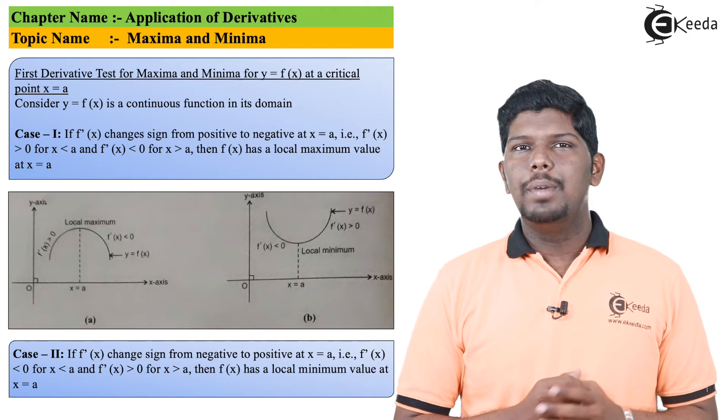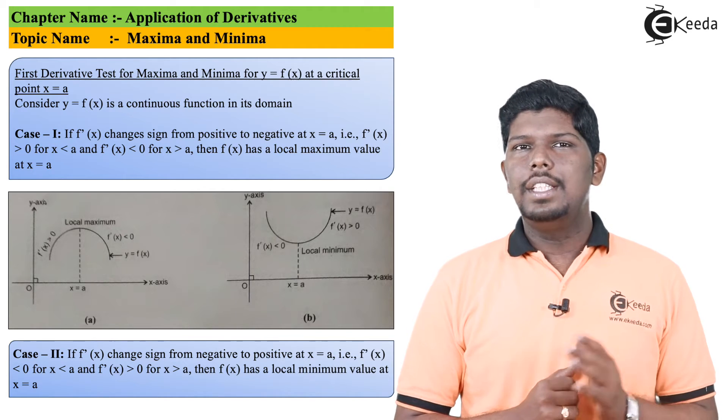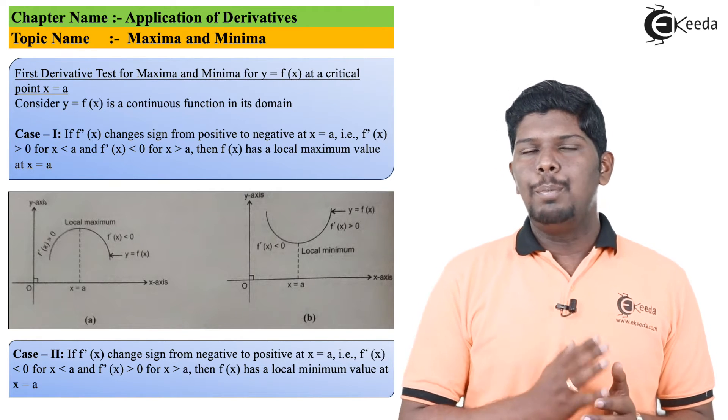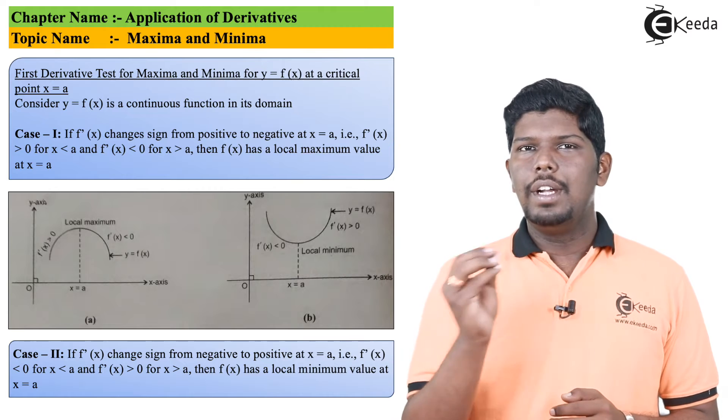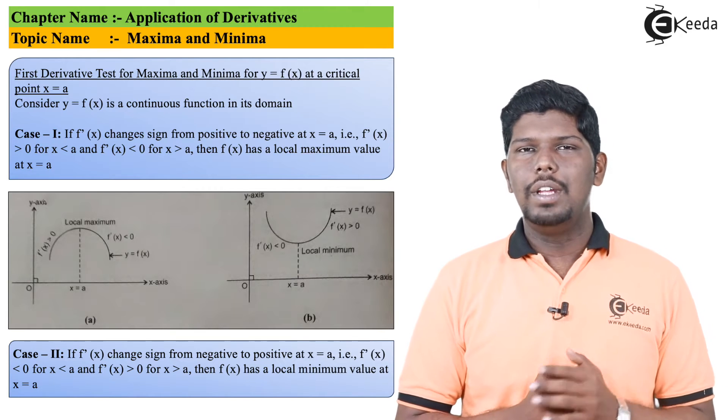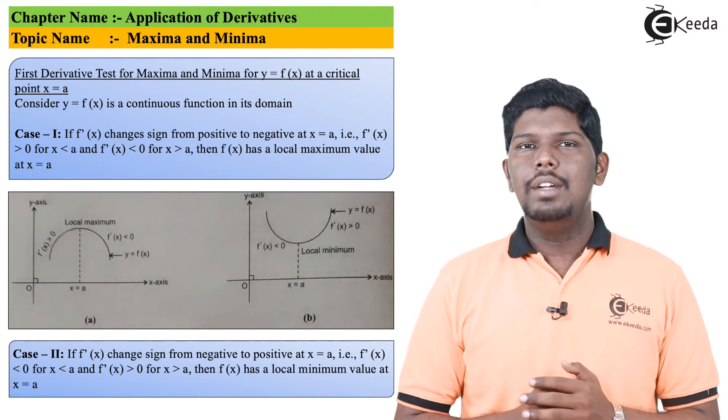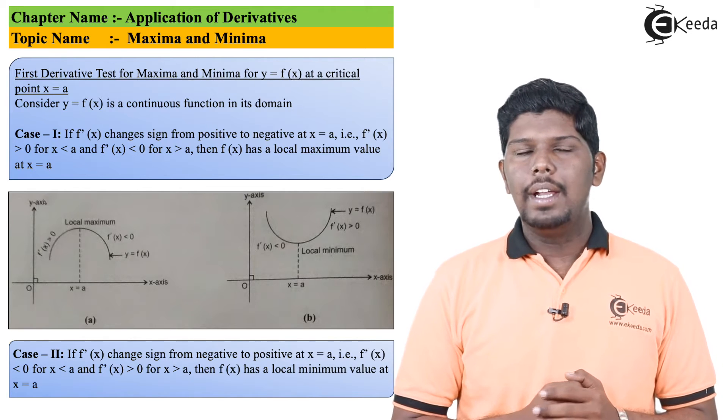In the first diagram, as you can see, if I consider slope of tangent up to x equals a, for different types of points that are present on the curve, if I draw tangent at every point, that tangent will have a positive slope.